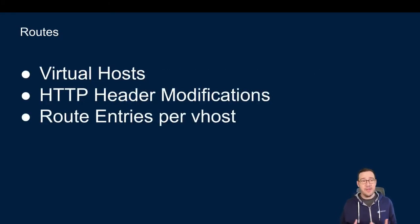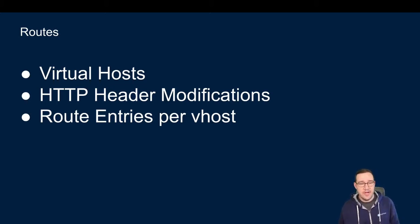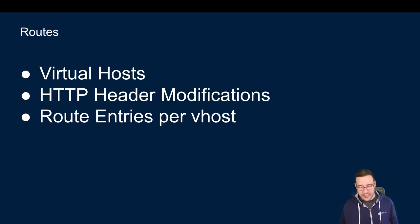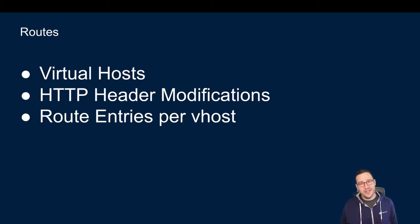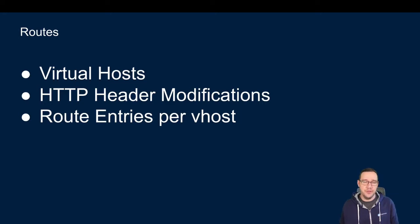Now that we have listeners, we have routes. Routes are results of listeners — listeners will call different routes. In our L7 model, we're going to have a bunch of different virtual hosts that we can route to. For example, stevesloka.com and vmware.com could be two different virtual hosts, and from there I can route them to different places, modify headers, and do various other things. Routes are what decides where traffic should go within your cluster.